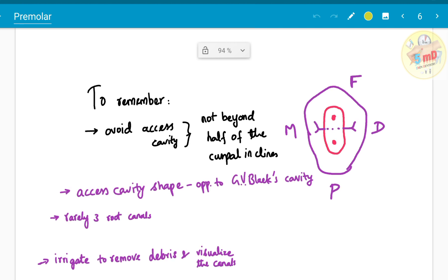This is the takeaway point to remember. It is the ovoid access cavity and it is opposite to the GV Black's cavity shape. Not beyond half of the cuspal inclines. This is the cusp. Not beyond half of the cuspal inclines. Don't make a very huge access opening in search of canals. The canals are straight away below the cusps. The access cavity should not extend beyond the half of the cuspal inclines.